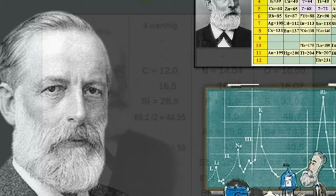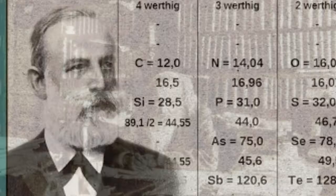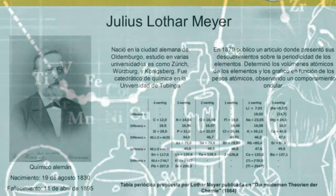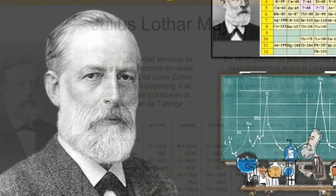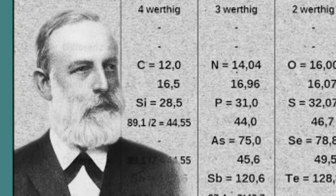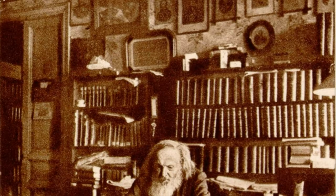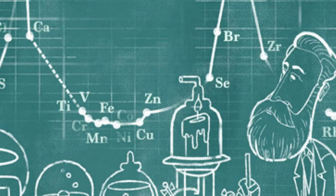His book, Die Modernen Theorien der Chemie, which he began writing in Breslau in 1862 and which was published two years later, contained an early version of the periodic table containing 28 elements, and classified elements into six families by their valence — for the first time, elements had been grouped according to their valence. Works on organizing the elements by atomic weight had until then been stymied by inaccurate measurements. He published articles about a classification table of the elements in horizontal form in 1862 and 1864, and in vertical form in 1870, in which the series of periods are properly ended by an element of the earth metal group.